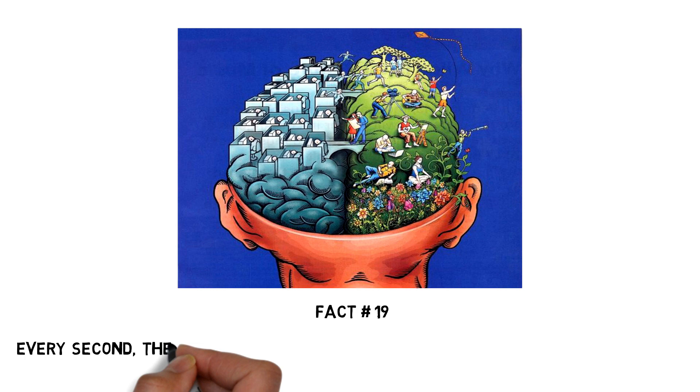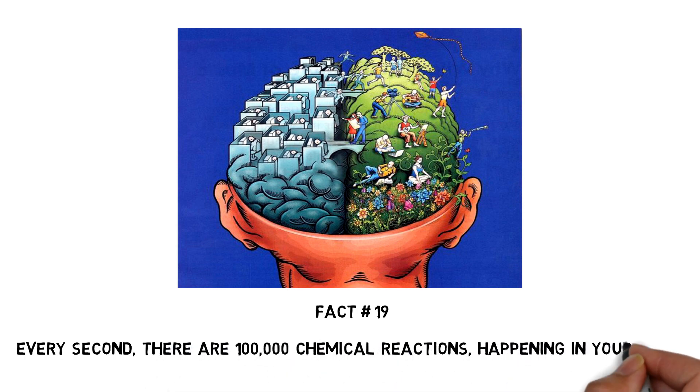Fact number 19: Every second, there are 100,000 chemical reactions happening in your brain.